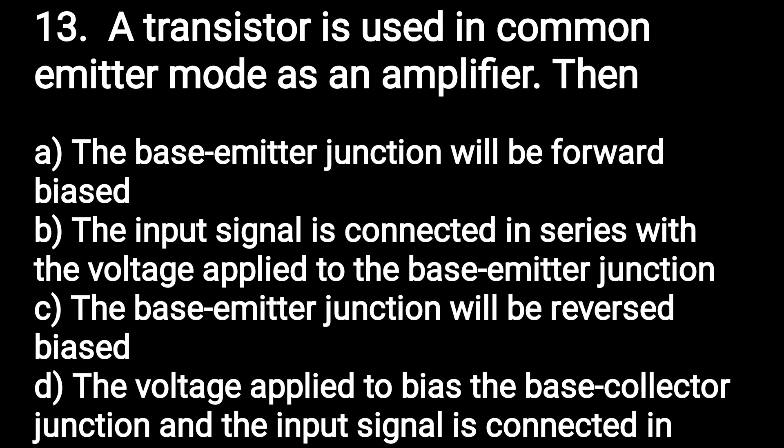Next question: a transistor is used in common emitter mode as an amplifier — then what? The base-emitter junction will be in forward bias. The input signal is connected in series with the voltage applied to the base-emitter junction. Option B is correct: when used in common emitter mode as an amplifier, the input signal is connected in series with the voltage applied to the base-emitter junction.